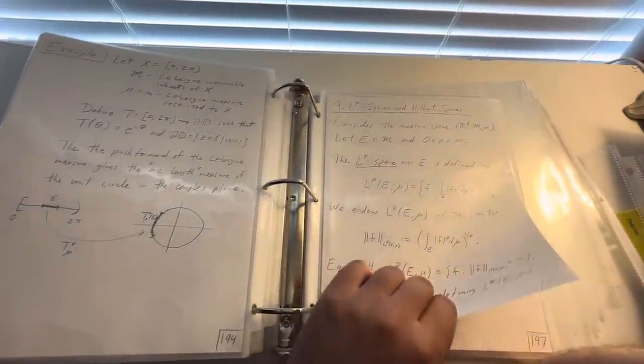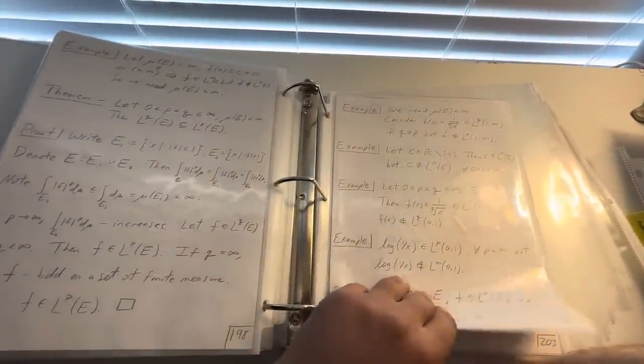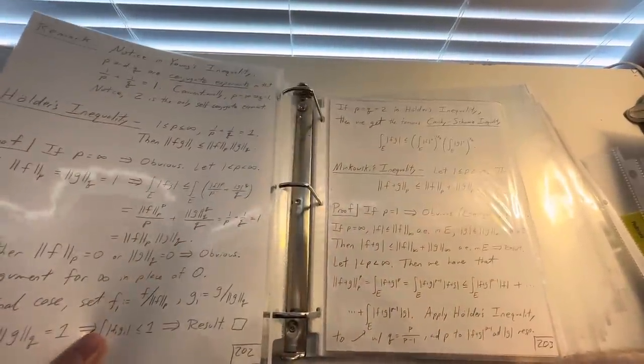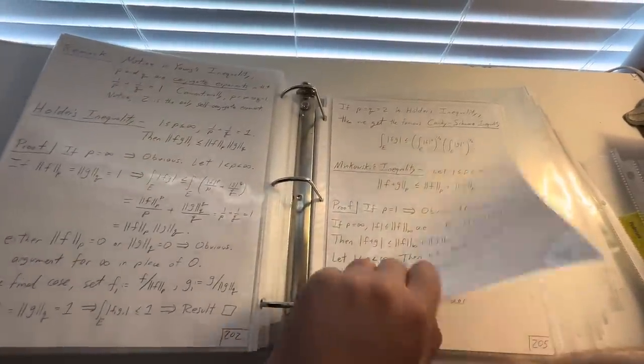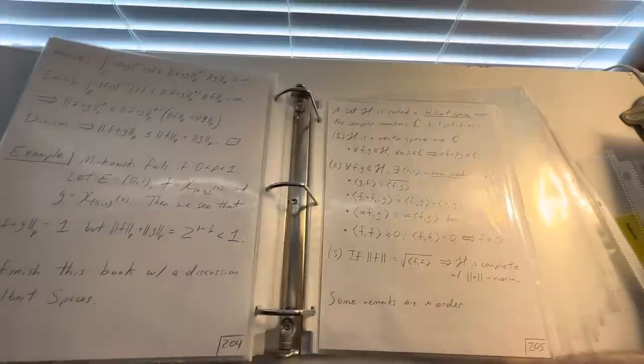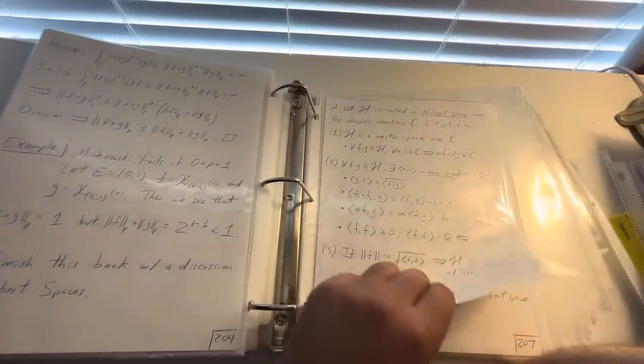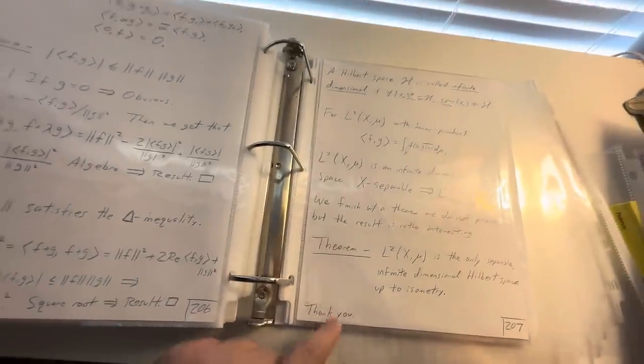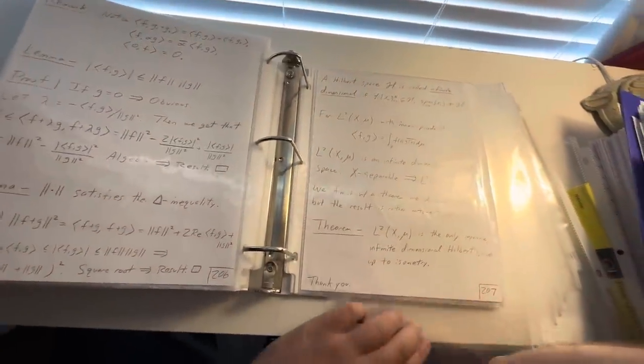And then chapter 9 is very short. It's about L^p spaces. Because I didn't really talk about L^p norms and stuff. And eventually it finishes with Young's Inequality, Holders, and Minkowski, which is how this book started. And then I had to define what a Hilbert space was. And that's pretty much it. I wrote thank you at the bottom for reading my book. So it's about 207 pages.